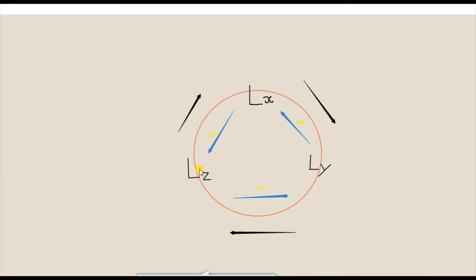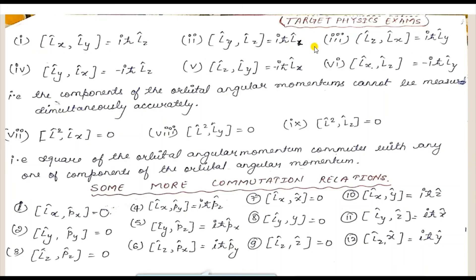If you go anticlockwise, for example [Ly, Lx], you get −iħ·Lz — a minus sign appears for anticlockwise direction. Similarly, [Lz, Ly] gives −iħ·Lx with a minus sign. Relations 1, 2, 3 are clockwise and 4, 5, 6 are anticlockwise. So [Lx, Ly] = iħ·Lz. You can verify this yourself. These values are not zero, meaning Lx, Ly, Lz do not commute with each other.